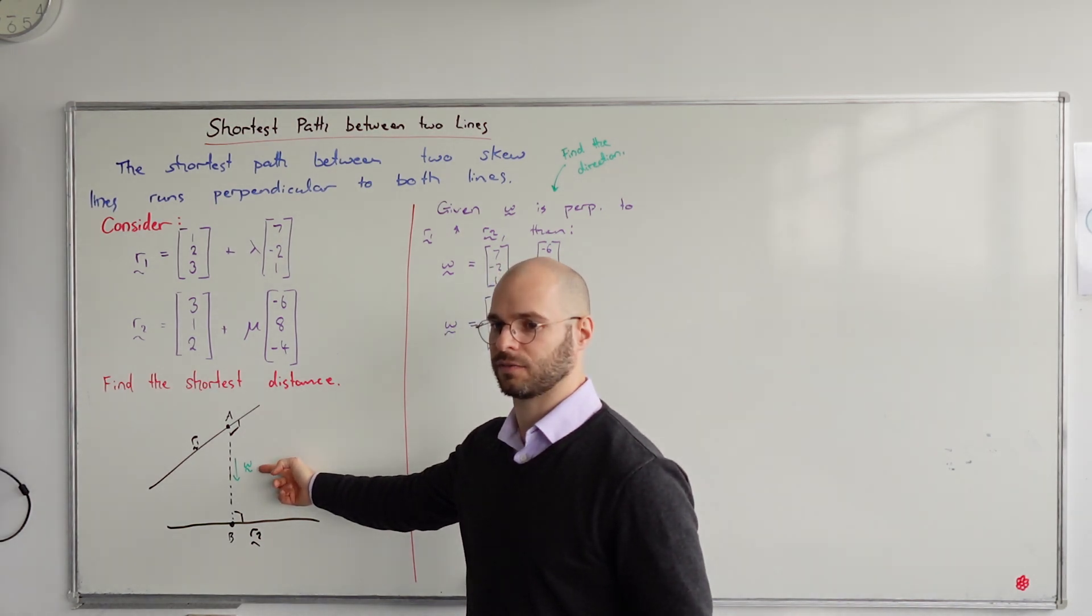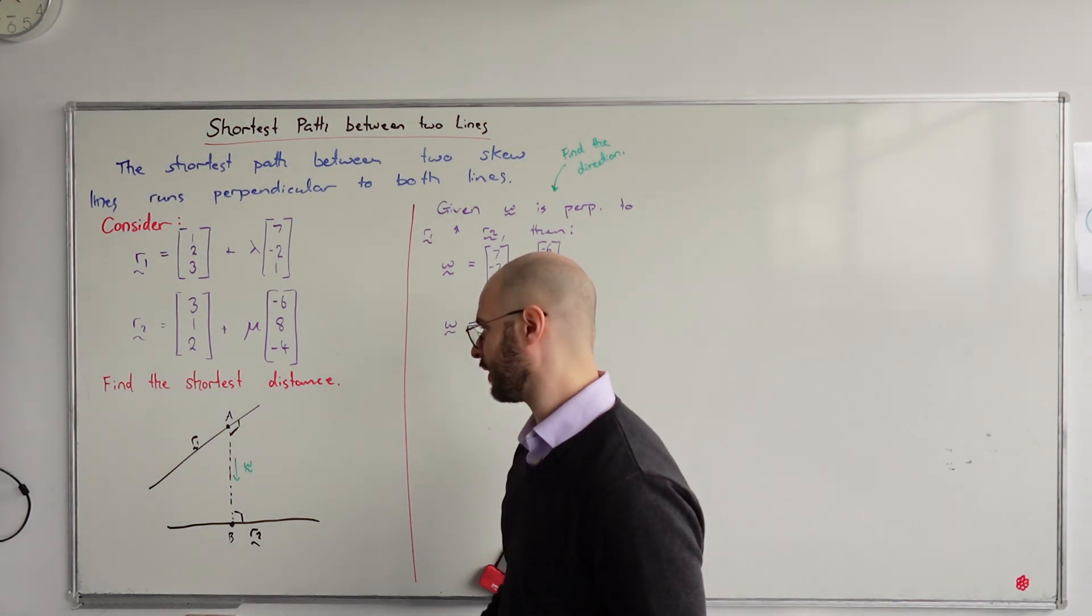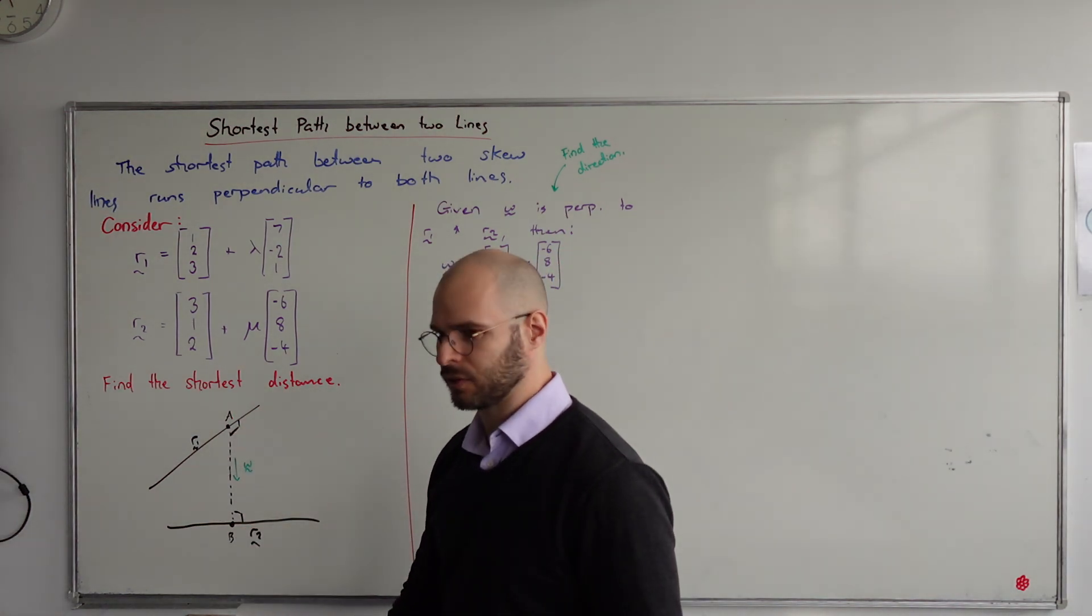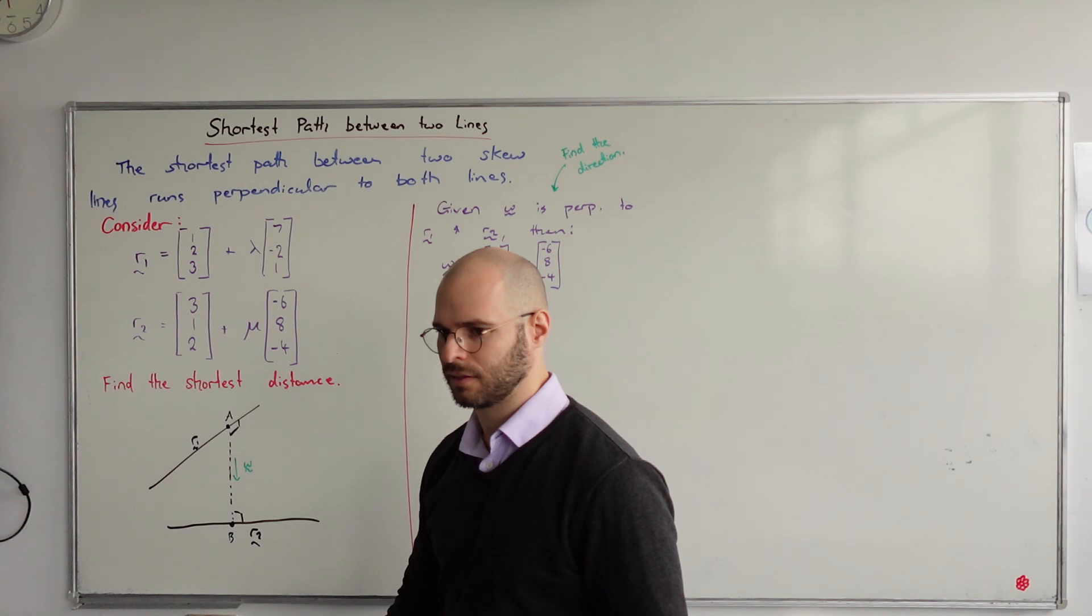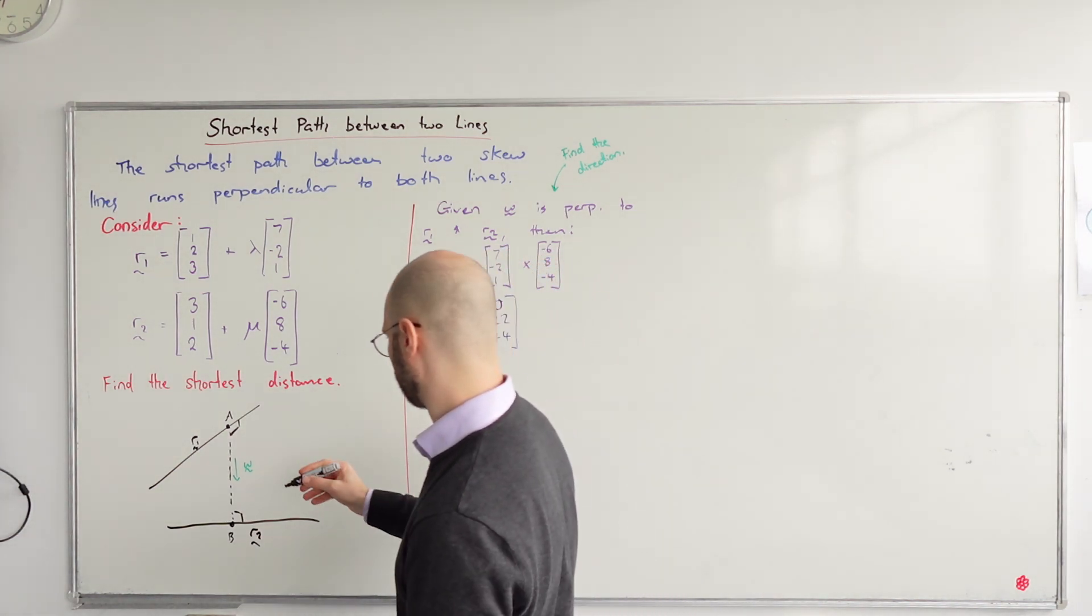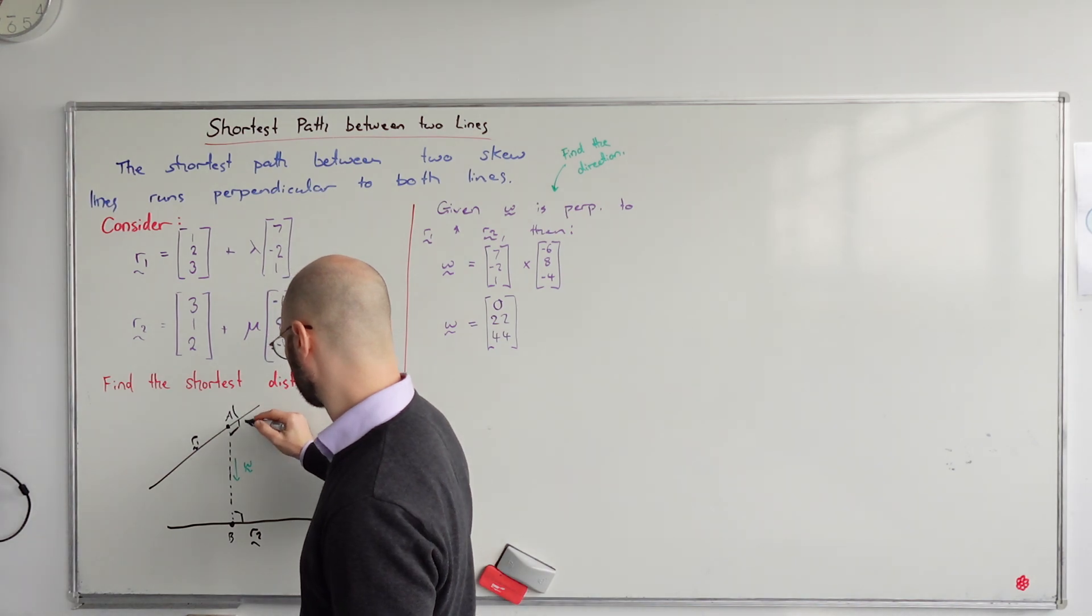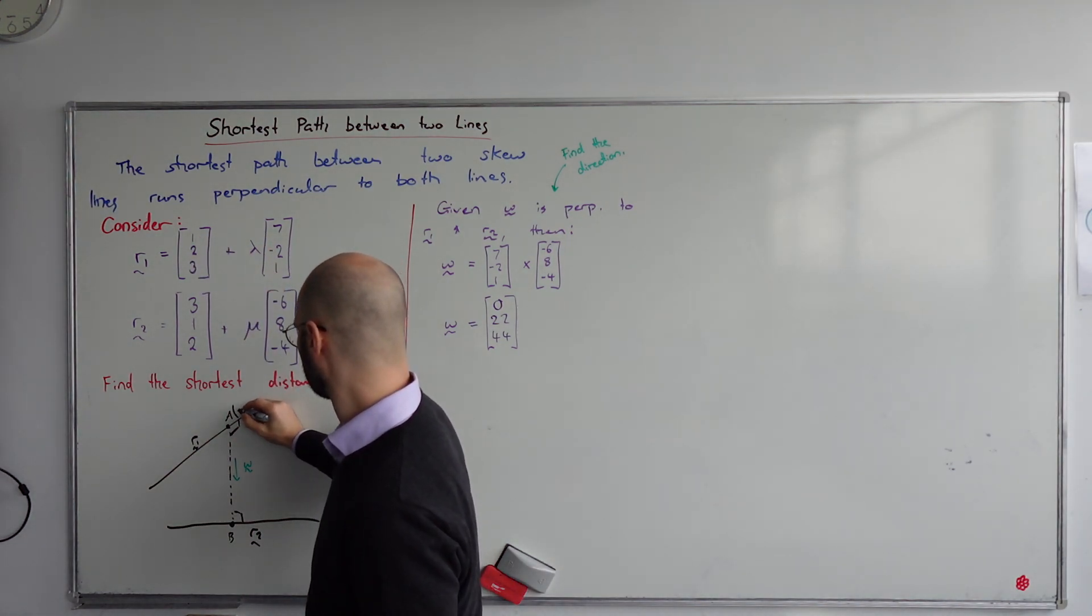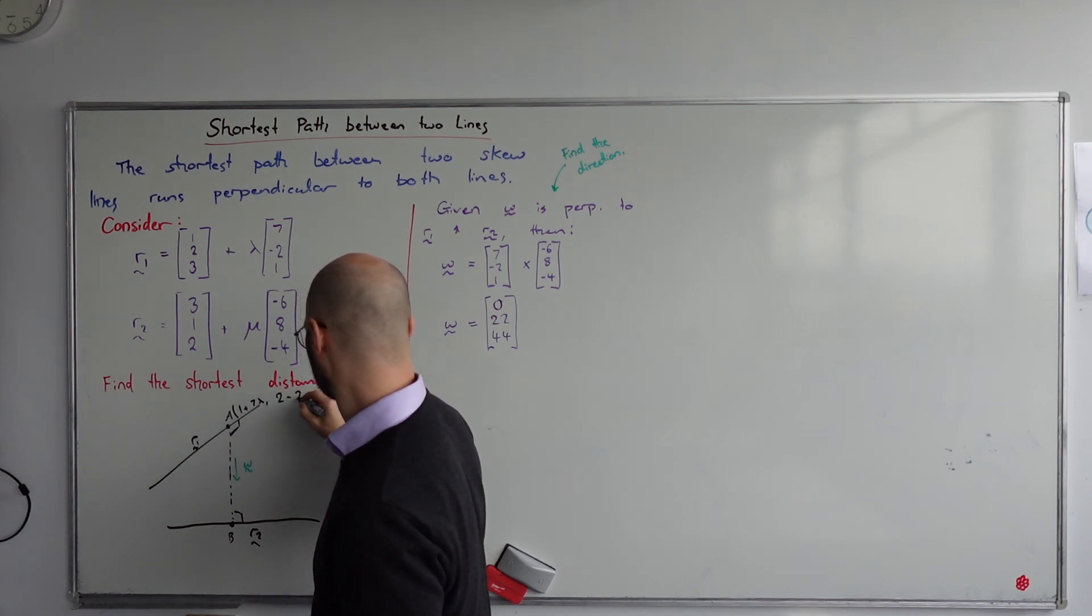Now, we know we're looking at vector AB. Is there some way we could figure out what A and B is? Where is point A? It's at (1 + 7λ, 2 - 2λ, 3 + λ).